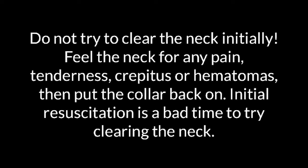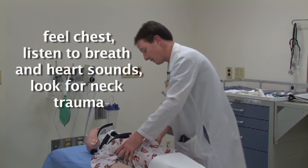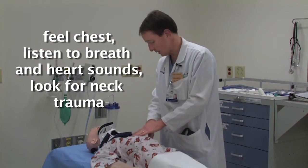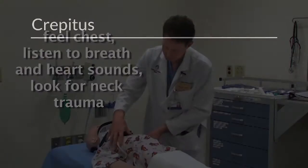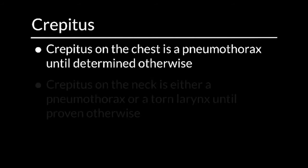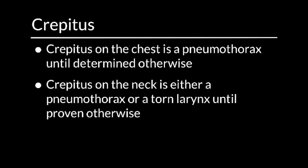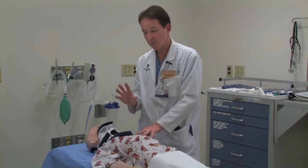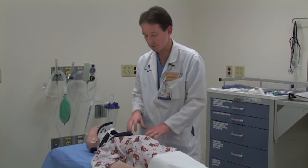Once you've felt the neck, move down the body. Feel the chest. Listen to the breath sounds again. Listen to the heart sounds. And look for any signs of trauma on the chest. Crepitus on the chest of a trauma patient is a pneumothorax until determined otherwise. Crepitus in the neck of a trauma patient is either a pneumothorax or torn larynx until determined otherwise. It could be something else, but you need to worry that it's a pneumothorax.